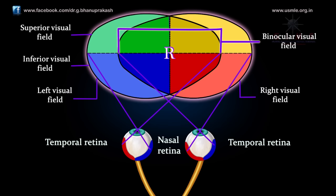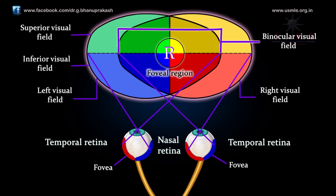The center of the visual field projects its image onto the foveal region of the retina. The highly specialized fovea has a dense concentration of small diameter cones and a one-to-one relationship between the cones and the bipolar and ganglion cells. Visual acuity is therefore especially high in this region.